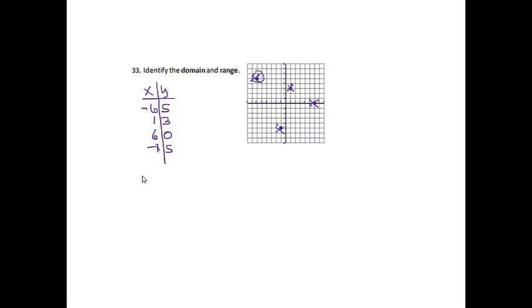So once I have my table, now it's pretty easy to recognize my domain and my range. So my domain is going to be negative 6, 1, 6, and negative 1. It's just a list. And we can't put a range this time because there's not things in between. And then my range is just 5, 3, 0. Oh, that was negative 5. So yes, we are going to list it. Okay, so our domain and our range. And we are set on that one.